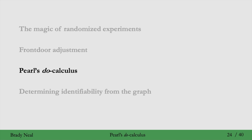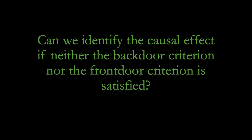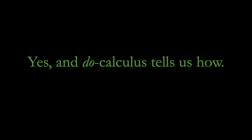We just saw the front door adjustment, which helps us identify causal effects when we can't use the back door adjustment. We'll now move on to Pearl's do-calculus. Here's an important question: can we identify the causal effect if neither the back door criterion nor the front door criterion is satisfied? The answer is yes, and do-calculus tells us how.